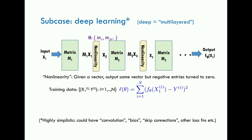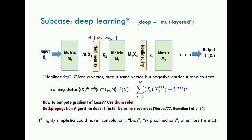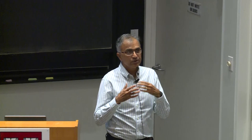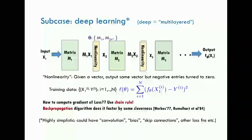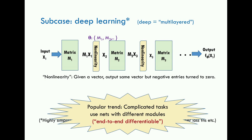To compute the gradient of the loss you use the chain rule, since the network defines a composition of functions — the second layer applied on top of the first, the third on the second, and so on. The backpropagation algorithm does this computation efficiently; it's one of the great algorithms of the previous century.